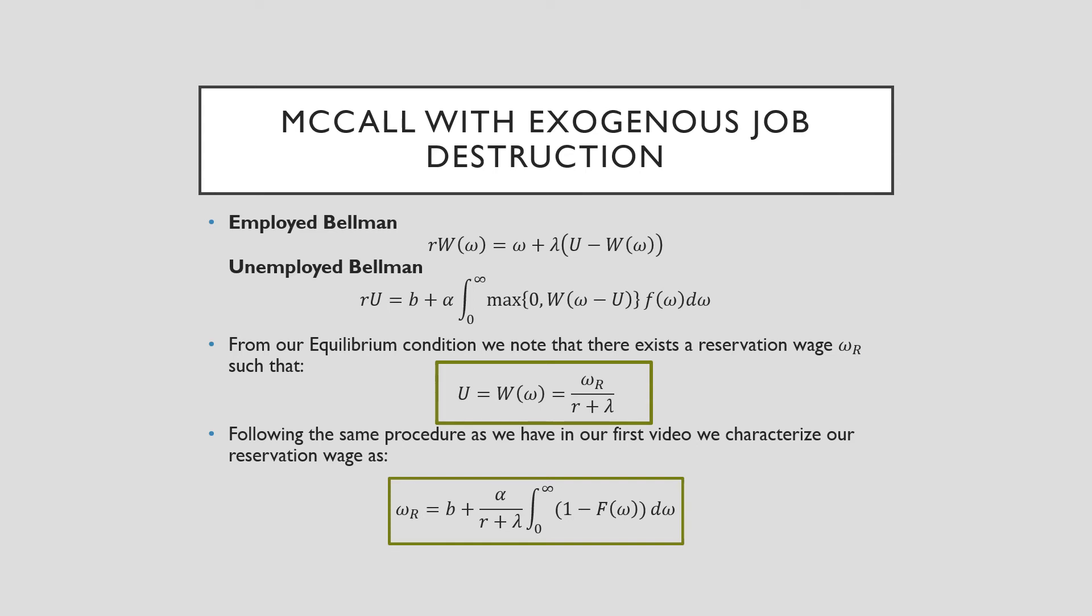So this is the McCall model with exogenous job destruction. And this is what's really more remarkable about McCall because we can write the whole thing on one slide really. Here, we have the employed Bellman and unemployed Bellman. But in the employed Bellman, we have to read it like a story. We have our worker value of being employed is equal to the wage they take at any instantaneous period in time, plus this probability that they will enter this unemployed value and give up their worker value. So that's how you're supposed to say it.